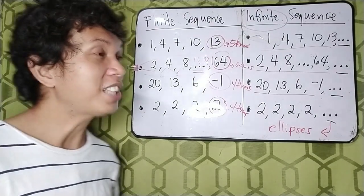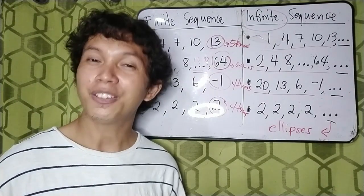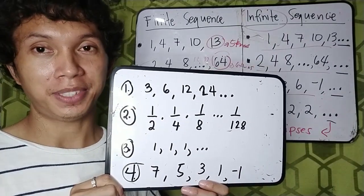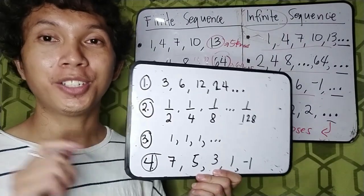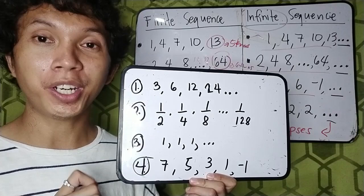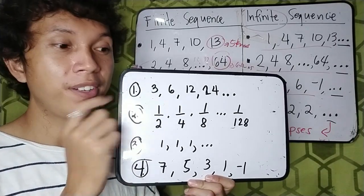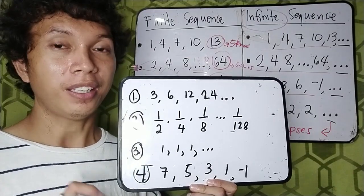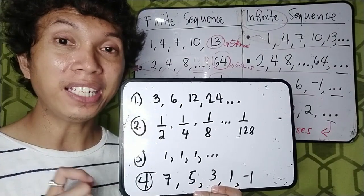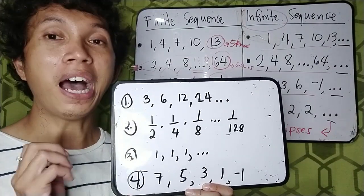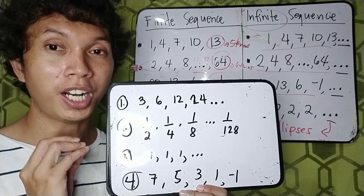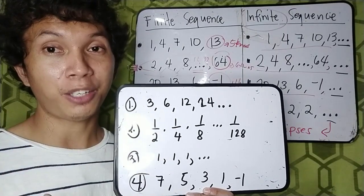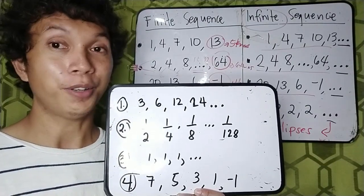Okay, so now it's time for you to have a self-check. So I have here 4 items. And all you need to do is to identify whether this given sequence is a finite sequence or infinite sequence. If it is finite sequence, then give how many terms there are in the sequence. And if it is infinite sequence, just write the word infinite. Okay?